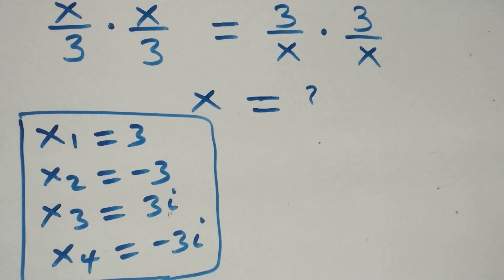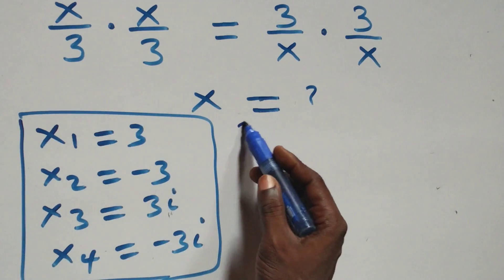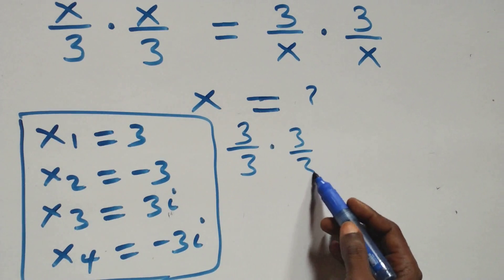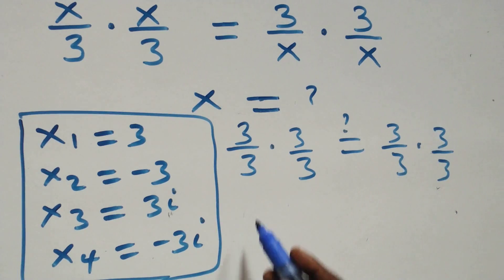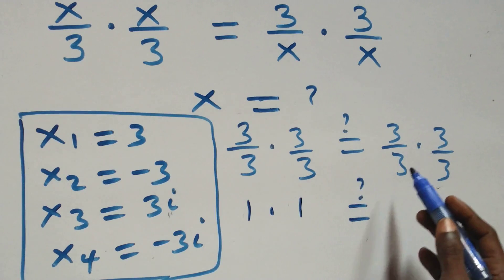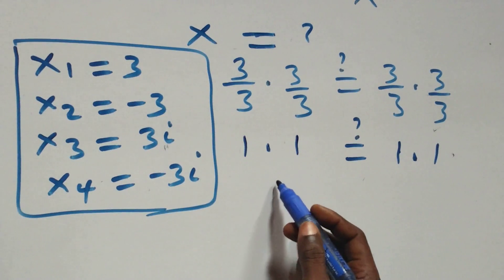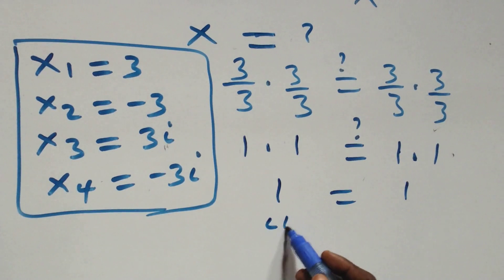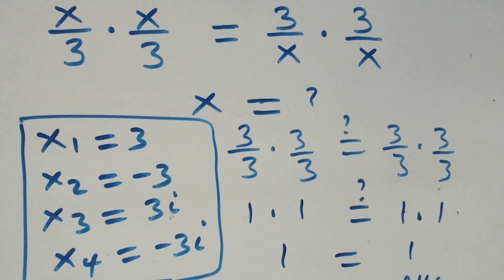We can check to confirm these satisfy the original equation. Substituting x equals 3: we get (3/3) times (3/3) on the left, which is 1 times 1 equals 1. On the right-hand side, (3/3) times (3/3) is also 1 times 1 equals 1. Left-hand side equals right-hand side, so x equals 3 satisfies the given problem.